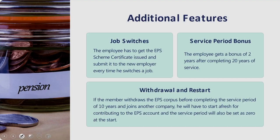When looking at specific features — job switches, service period bonus, withdrawal and restart — we must understand the eligibility criteria. For a person to be eligible for benefits under EPS: he should be a member of EPFO, he should have reached the age of 58, and he should have completed 10 years of service. He can also withdraw his EPS at a reduced rate from the age of 50, or defer his pension for up to 2 years until age 60, after which he gets pension at an additional rate of 4% for each year.